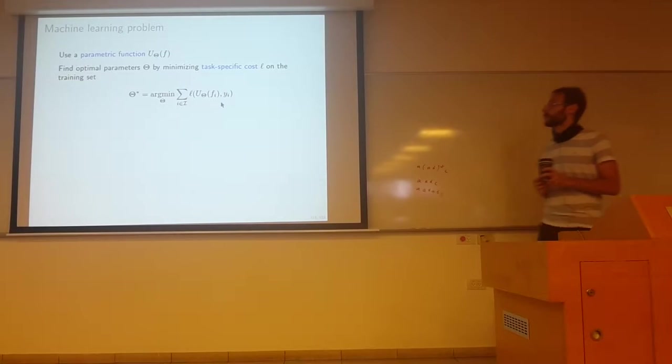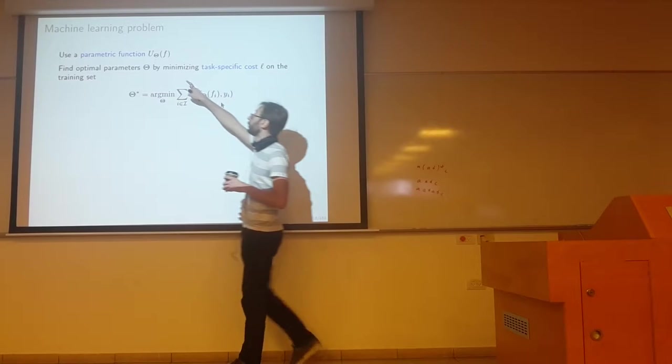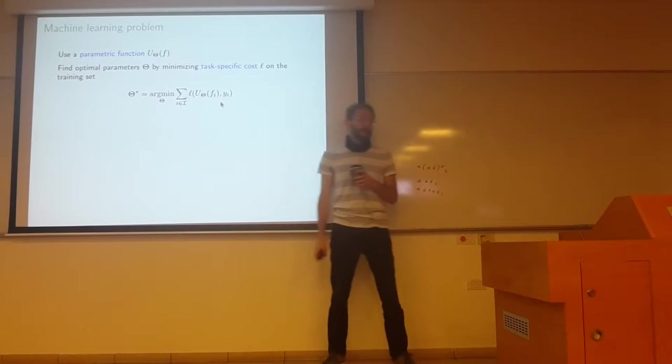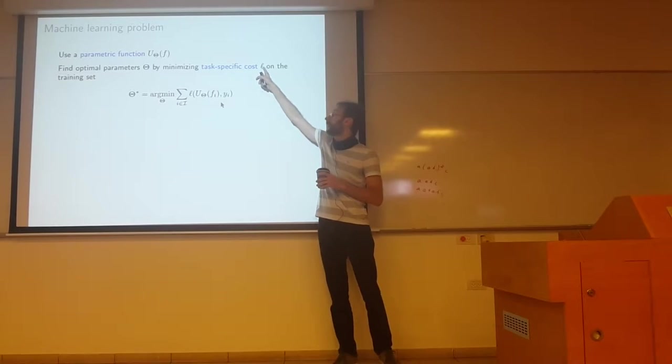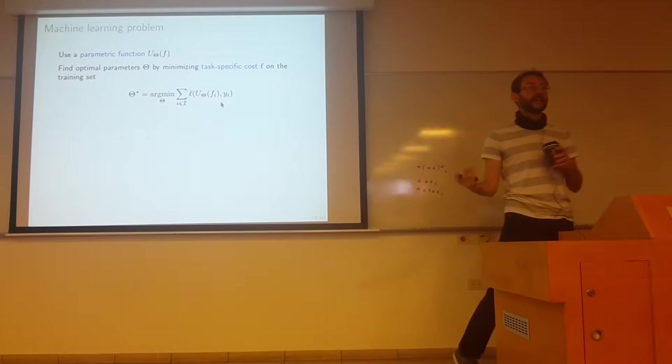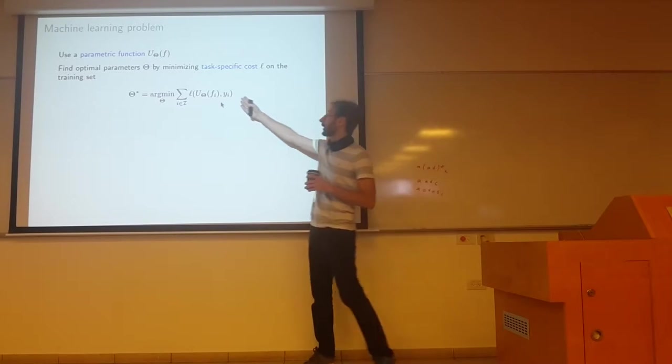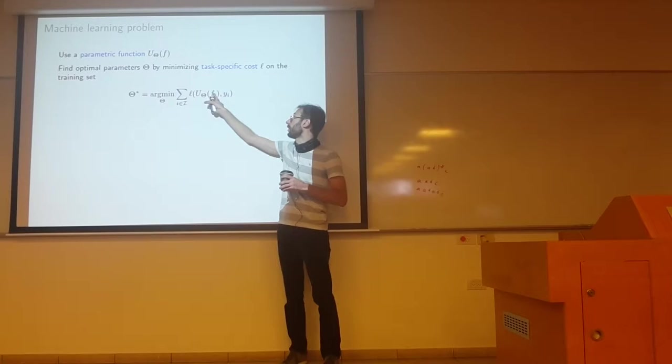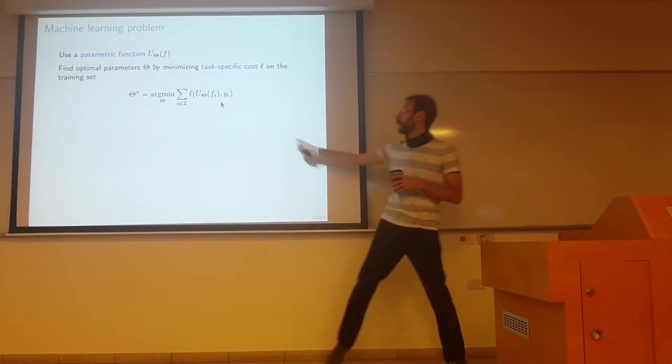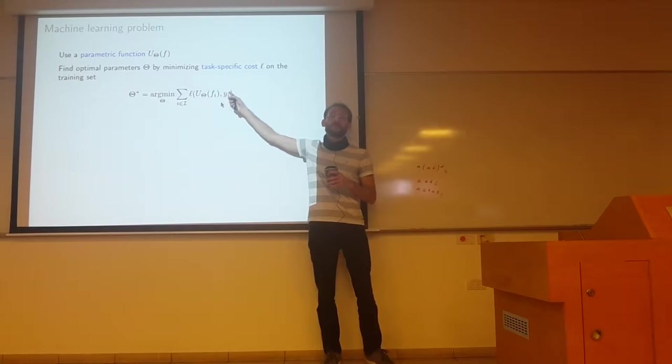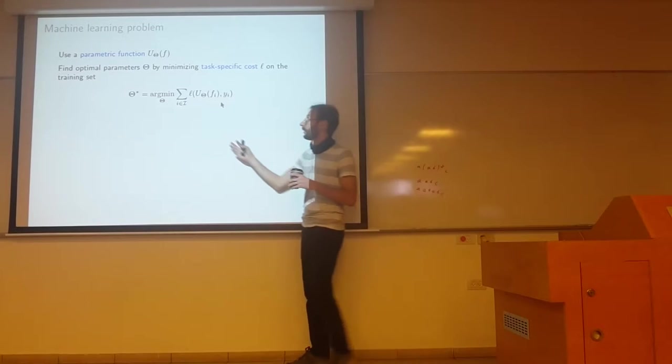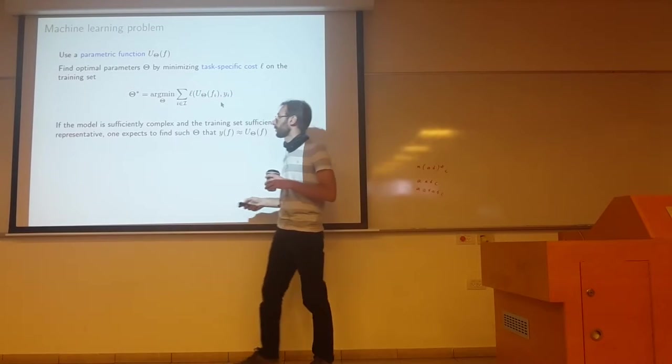Usually it's approximated using some parametric function that I denote by u with parameters theta. We find optimal parameters theta by minimizing some cost L that is tailored for our task, depending on whether we're doing regression or classification, on the training set. Basically, I feed u with examples of my data with fi's, compare the outputs to yi's, and want this difference to be as small as possible. I'm finding the optimal set of parameters that minimizes this cost.